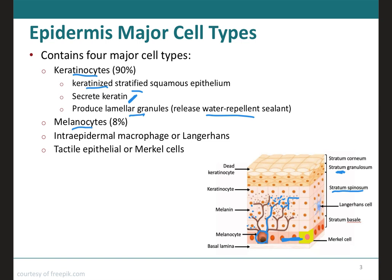Although melanin granules effectively protect keratinocytes, melanocytes themselves are particularly susceptible to damage by UV light. That is why there is a high incidence of melanoma in individuals exposed a lot to the sun. Another important thing to understand is that all of us have the same amount of melanocytes. What differs between different skin colors is the amount of melanin the melanocytes produce and whether the projections of the melanocytes reach only the stratum spinosum or all the way to the stratum granulosum. Individuals with darker skin will have melanin present in the higher stratum granulosum.